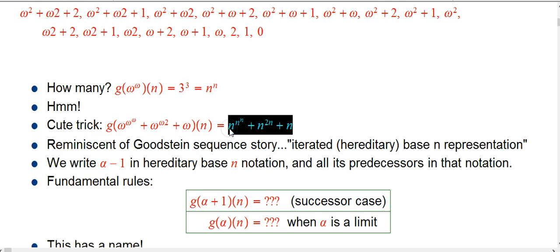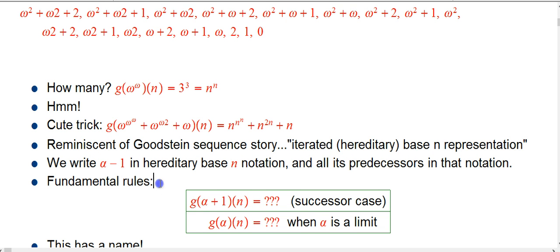Even though we have a nice rule up through — this is going to take us up through epsilon naught basically — I want to look at some of the fundamental ideas that have to do with g, because there's actually a really elegant way to describe how g behaves that in principle can describe g values for really huge ordinals, and that's what we're going to be interested in doing. So what are the fundamental rules?